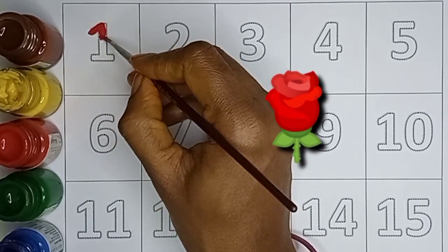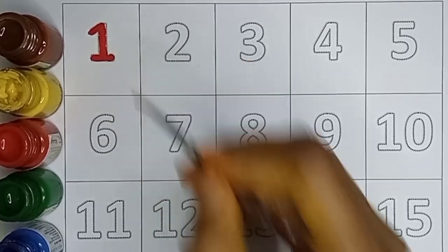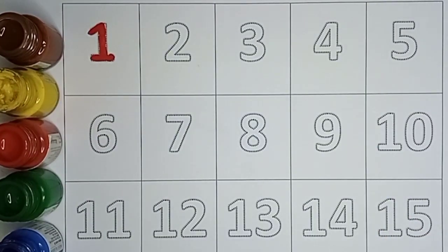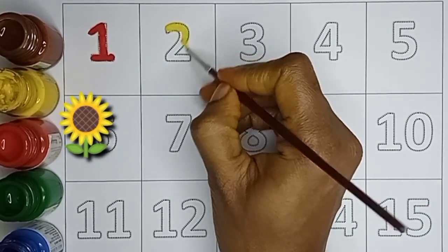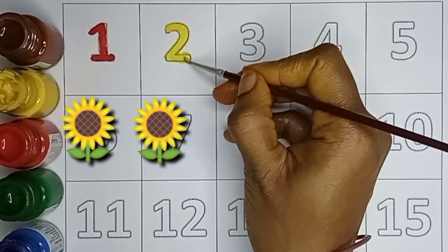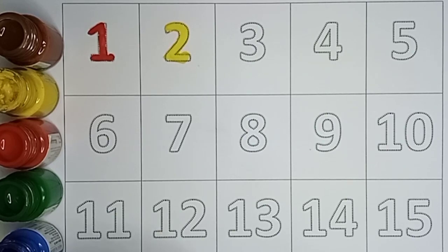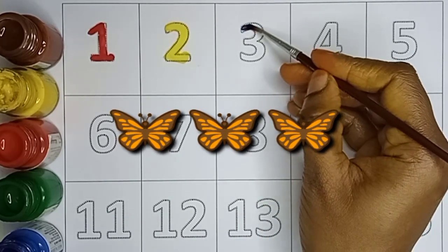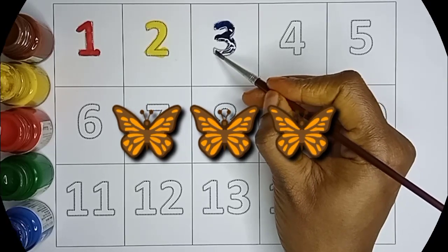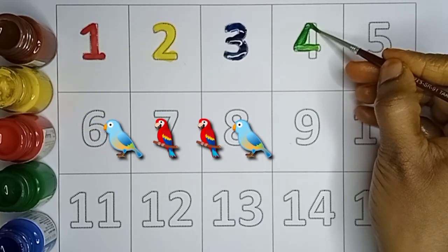One. One rose. Yellow color. Two, two sunflowers. Three, three butterflies. Green color. Four, four birds. Black color.